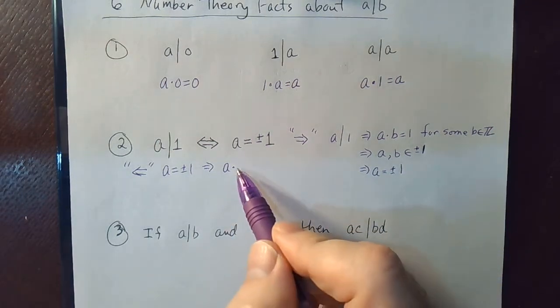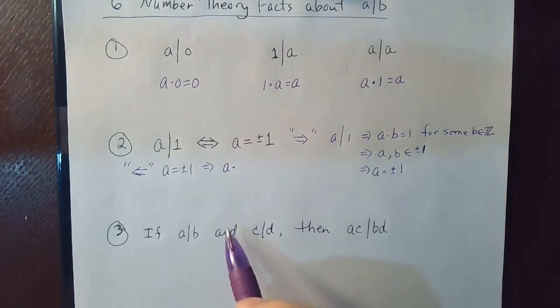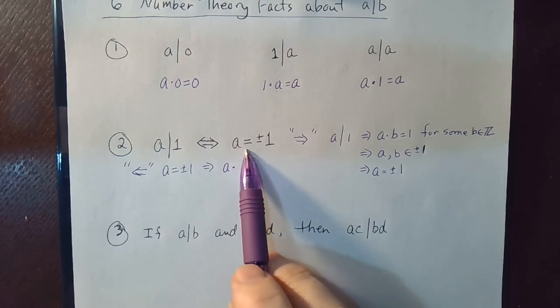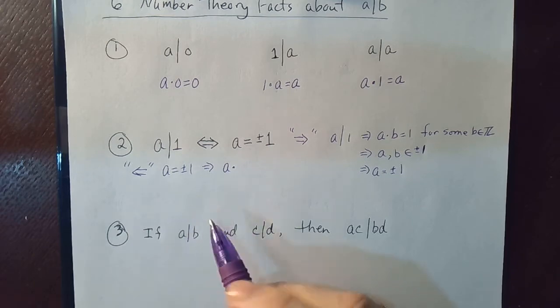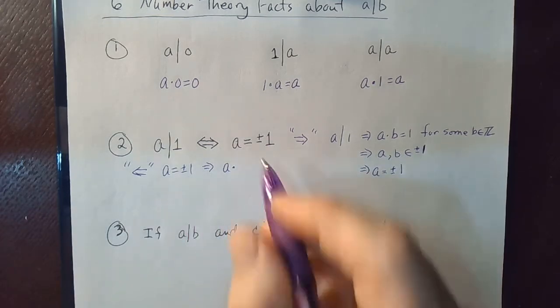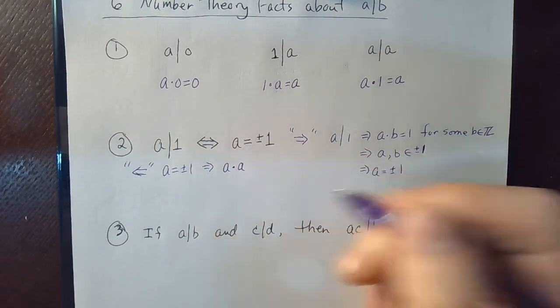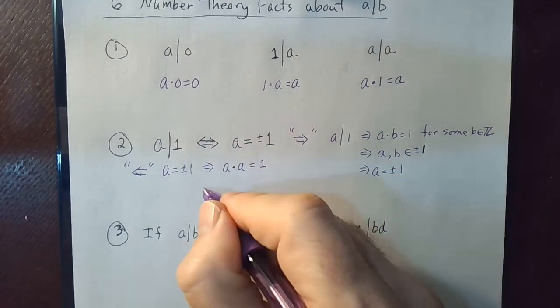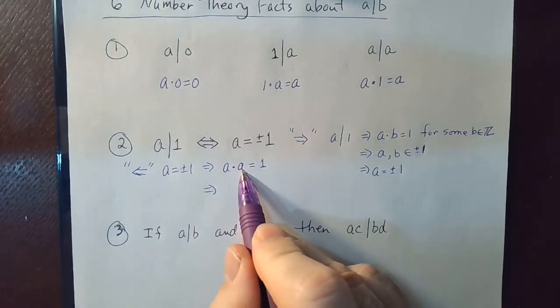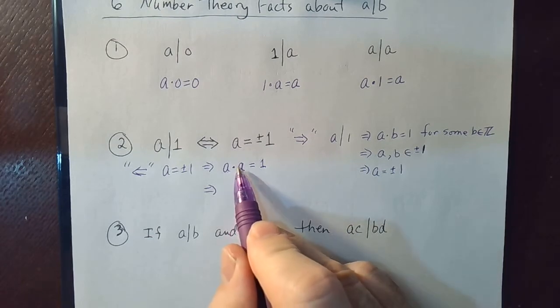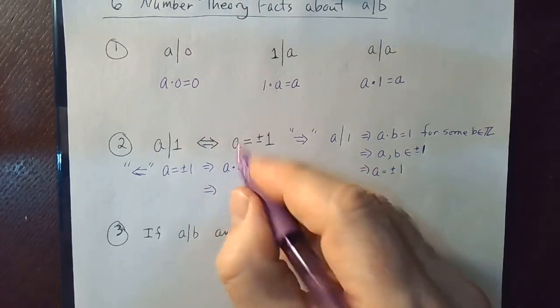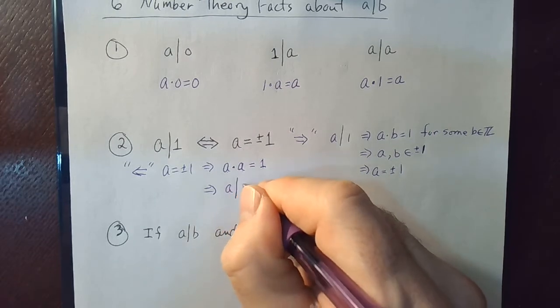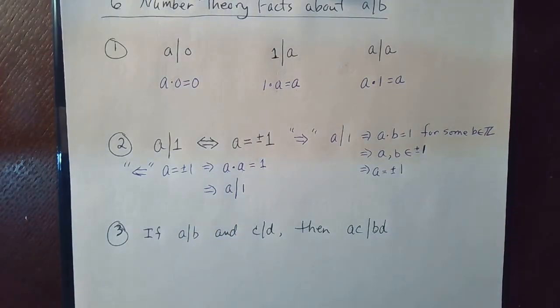Sorry for cutting that previous video short. Basically, we're proving that if a is plus or minus 1, then a divides 1. So if a is plus or minus 1, that means that a times a would be a squared, which is equal to 1. So we found an integer such that if we take a and multiply it by this integer, we get 1. Therefore, a divides 1. So that was a two-directional proof and we're done.